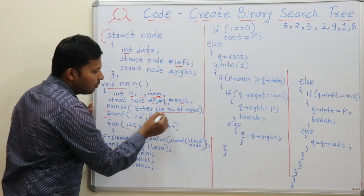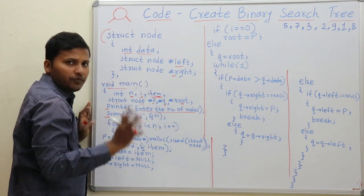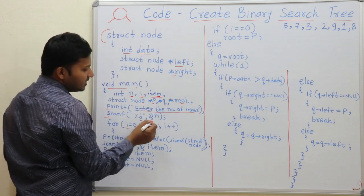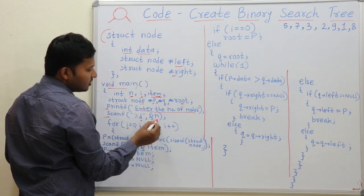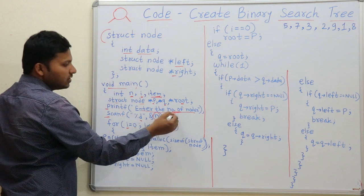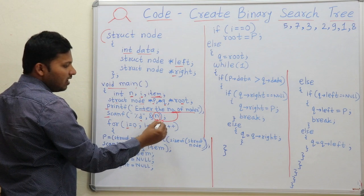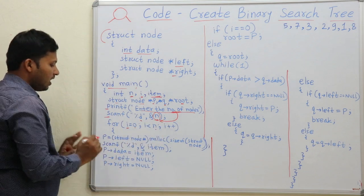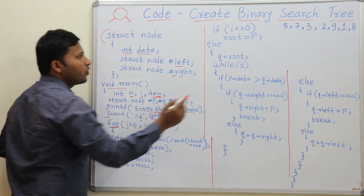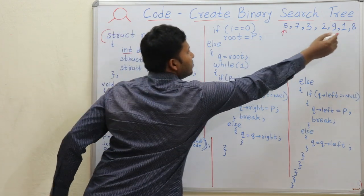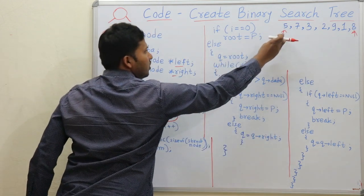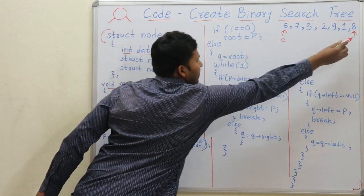printf enter the number of nodes — so first you have to take the number of nodes. Then scanf percentage d at the address of n, means you have to take the number of nodes in the variable n. Now in a for loop we will go from the first element to the last element, so from i equal to 0 to n.